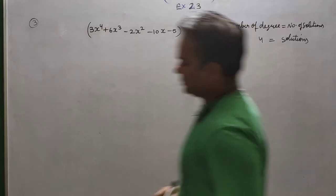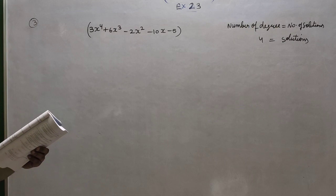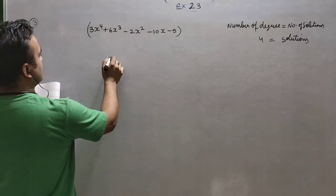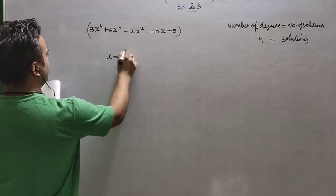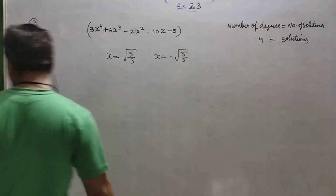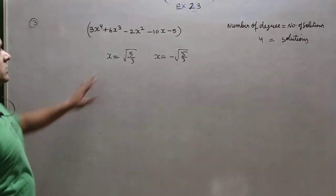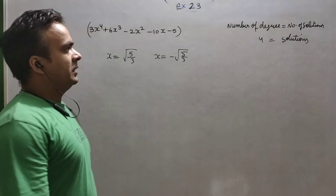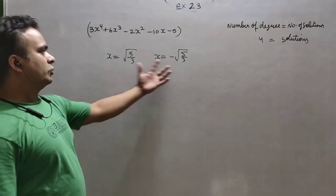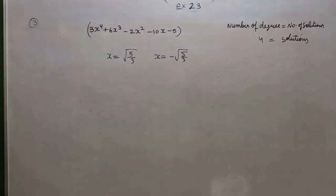This is a very important term for board exams — I have seen this term so many times. One root is given here: root 5 upon 3, and the second is minus root 5 upon 3. This is given in root form and we want two more roots because there are four roots total, and two roots we have to find.